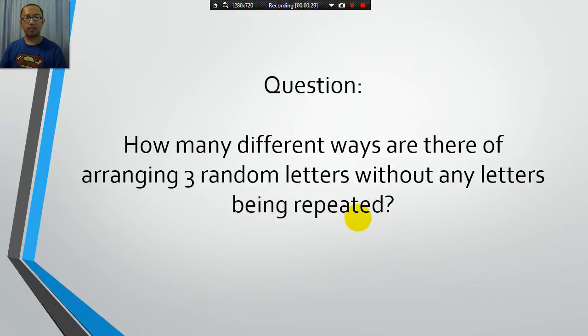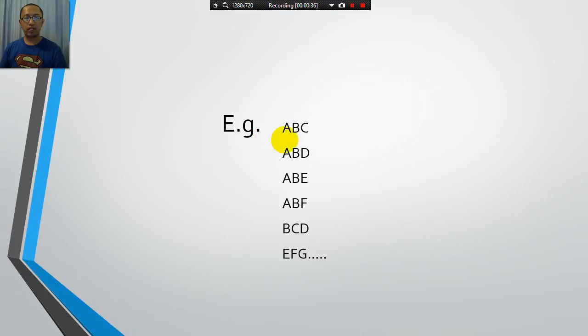Let me give you an example of what this question means. We pick three random letters from the alphabet and write it out in order like this. ABC, that's one arrangement. ABD, that's another arrangement. ABE, so just any three random letters. Here I have provided you with six arrangements. You can think of another three yourself, just any other three letters in the alphabet.